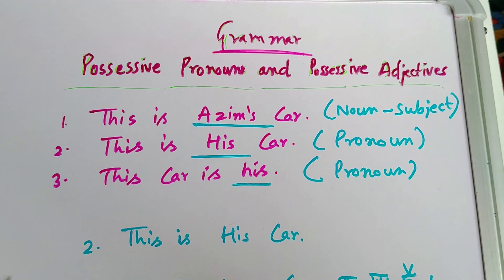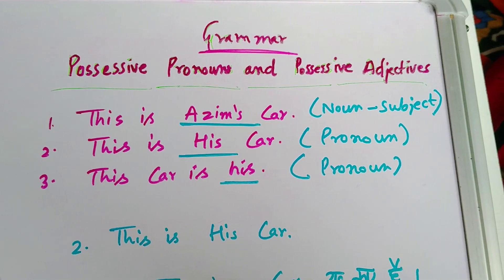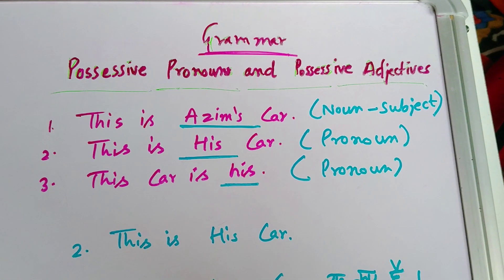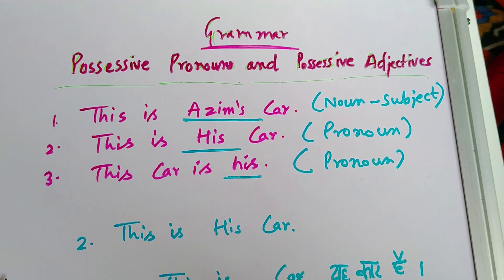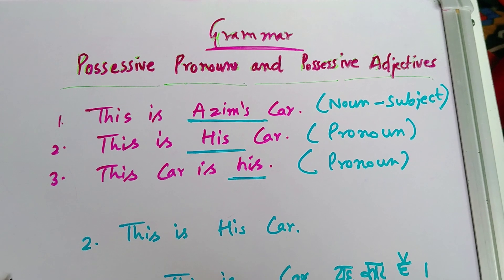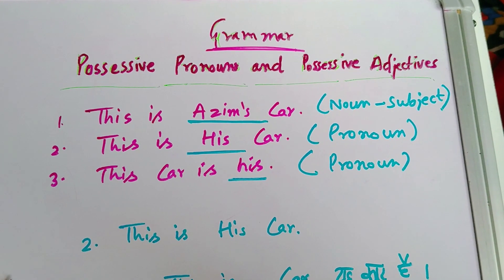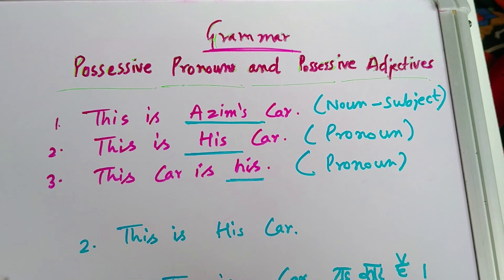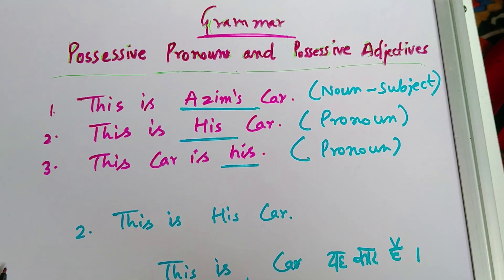Before we discuss the chapter, let us know the meaning of these words. Possessive word actually comes from possession, it means adhikar. Pronoun, all of you are already aware that the word which comes at the place of noun, we call pronoun.